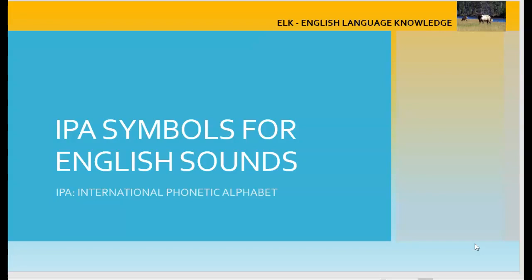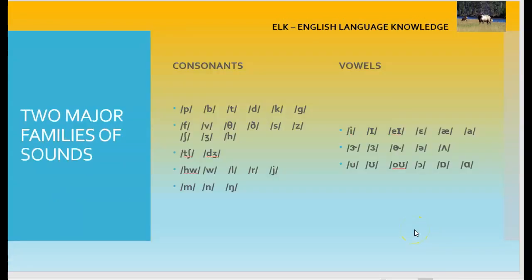IPA stands for International Phonetic Alphabet, a system of phonetic notation devised by the International Phonetic Association as a standardized representation of the sounds of spoken language. The IPA includes a symbol for each possible sound of the existing spoken languages.